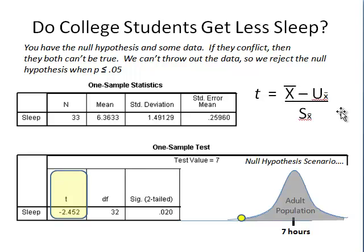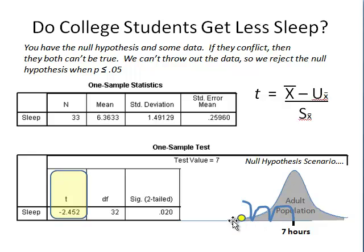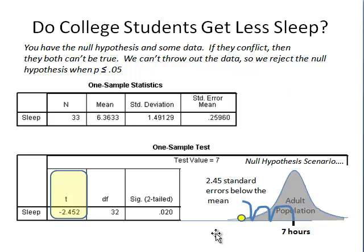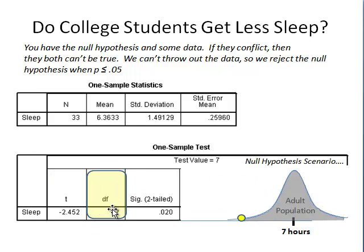That t-value of negative 2.45 means our sample mean is approximately 2.45 standard errors below the mean — about two and a half standard errors below. If the null hypothesis is true, this would be a very unlikely sample mean. The degrees of freedom shown in the SPSS output is 32, which is simply calculated as our sample size minus 1.